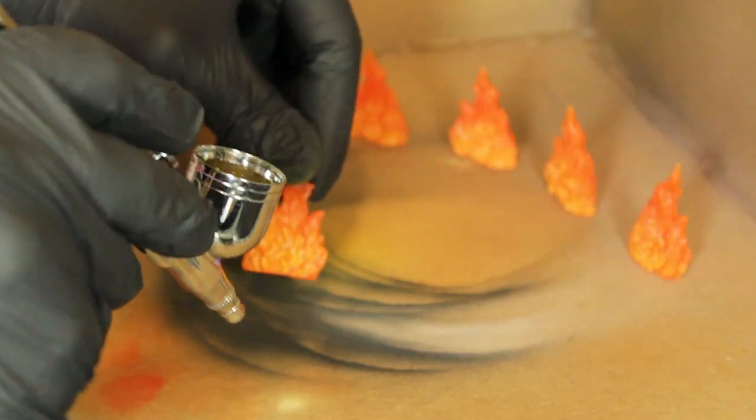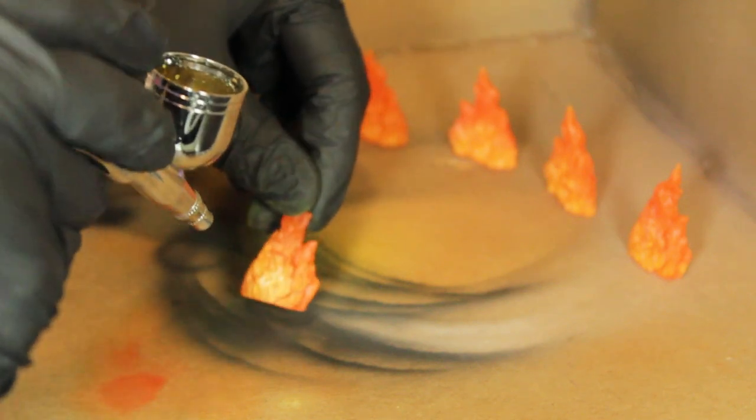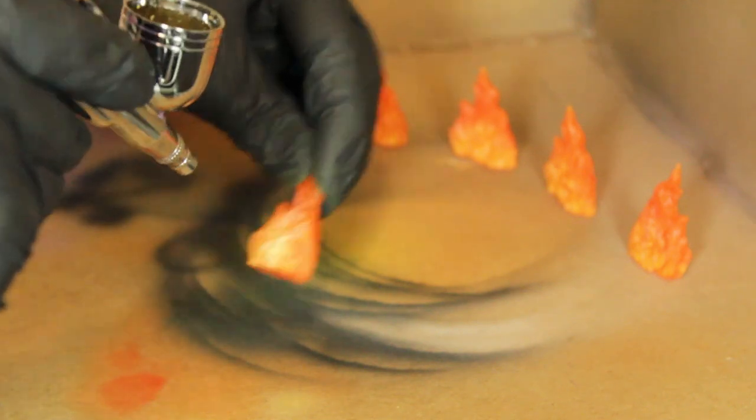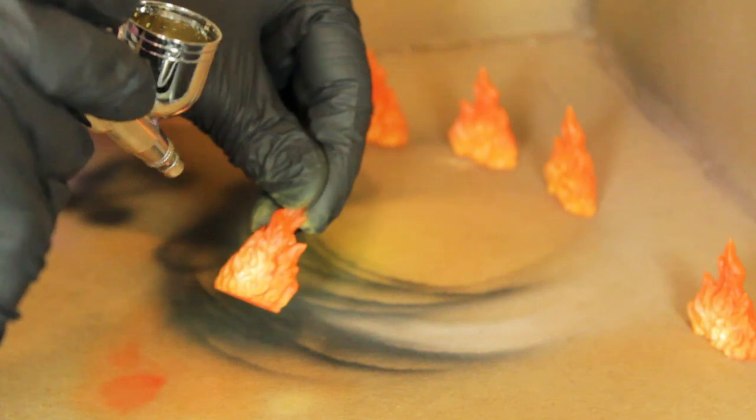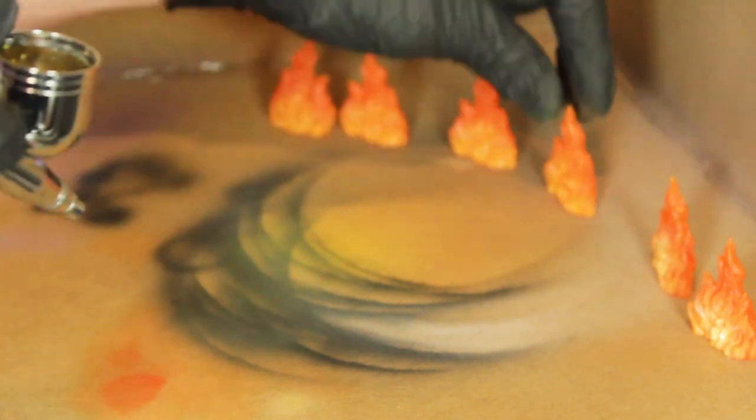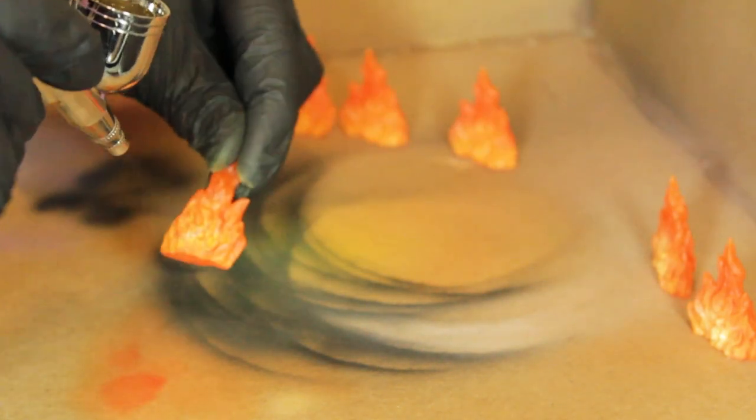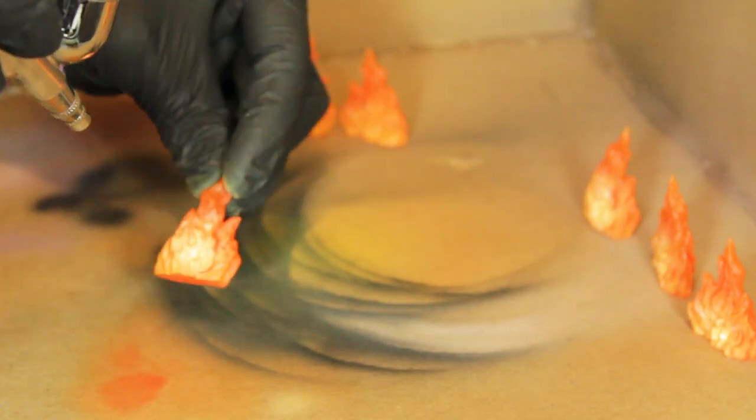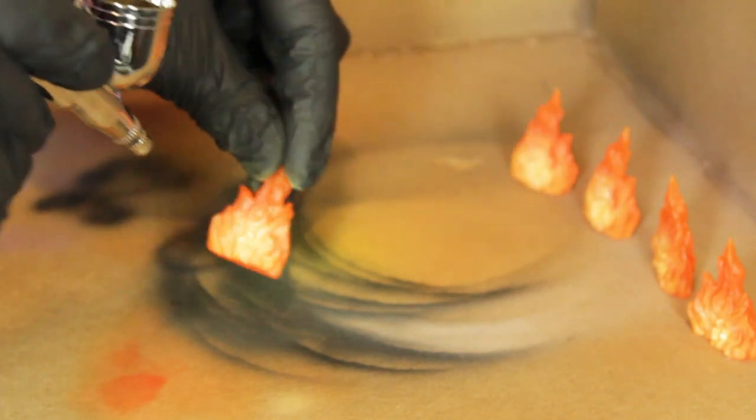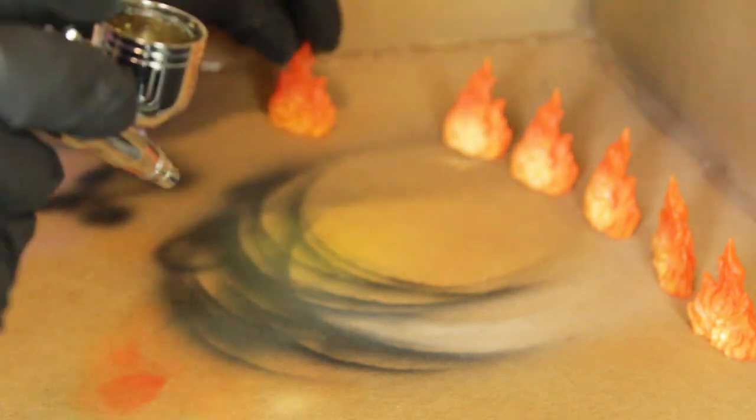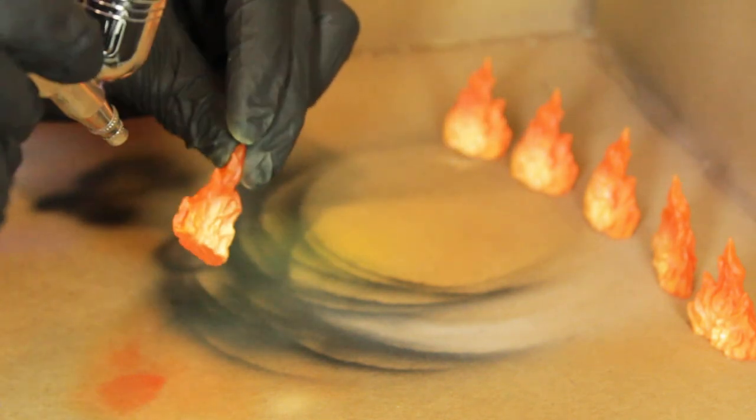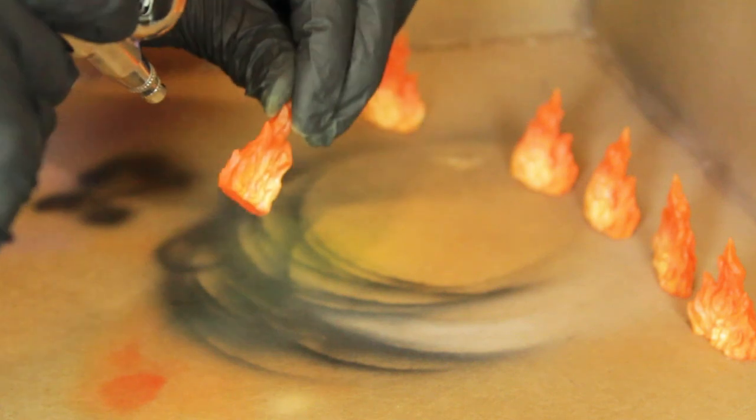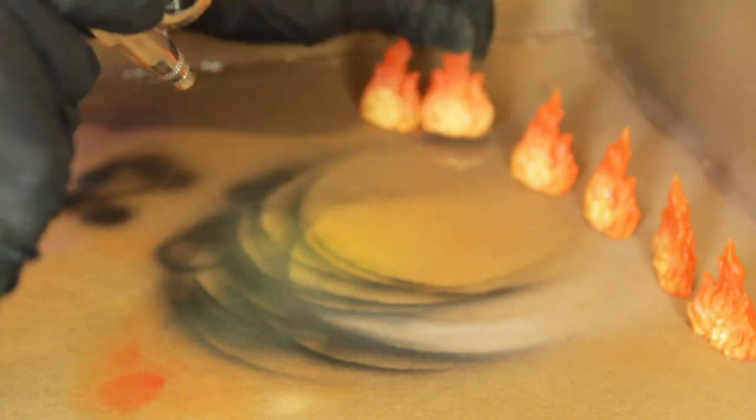Okay, so once that's dry, I'm going to come back in with the golden glow. And I'm just going to hit the core of these fires. Don't want to overdo this, because it'll be a pretty powerful effect. And in between colors, I'm just mixing what I have left in the pot of my airbrush. So, I'm taking that kind of dirty paint color that's left in, and mixing in my new color to help the transition.